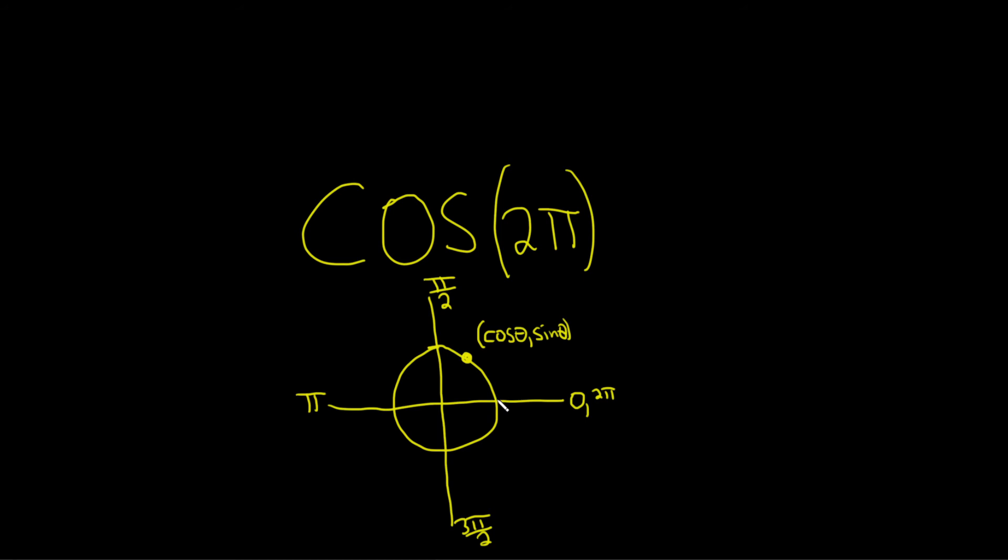So we're interested in the ordered pair here because we want the cosine of 2π. Since this is the unit circle, the distance from the center to this point here is 1. So that means the x-coordinate is 1. And then since we haven't really gone up or down, the y-coordinate is 0.